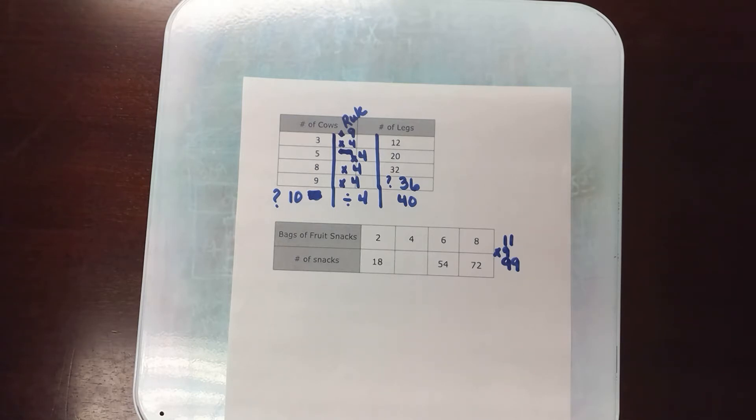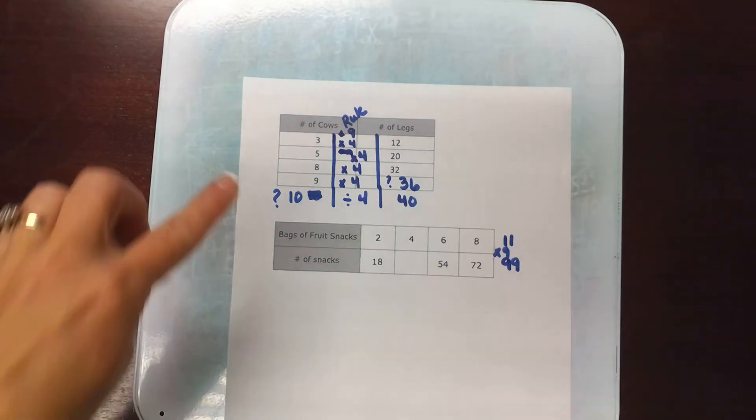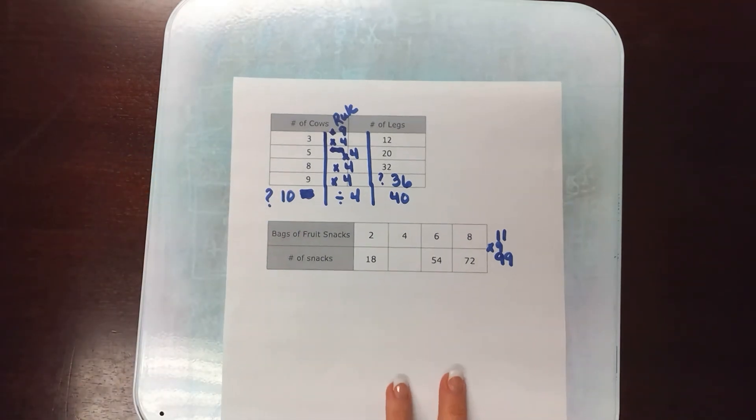You can do tables concretely. They can use pattern blocks to build a shape and then talk about how many different pattern blocks it would take to build that shape 2 times, 3 times, 4 times. So do begin concretely with this topic and from those cars or the pattern blocks or whatever it is that students have, build the table with them. Then you can move on to the more abstract where the table's already created for them.